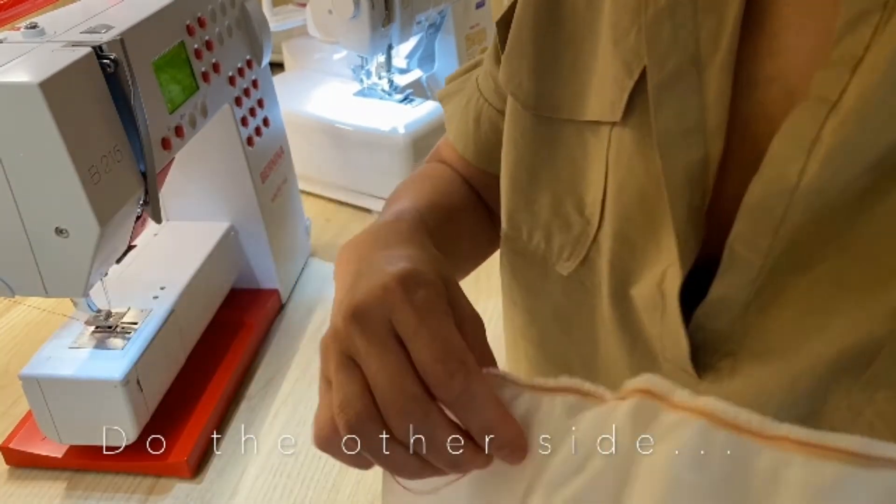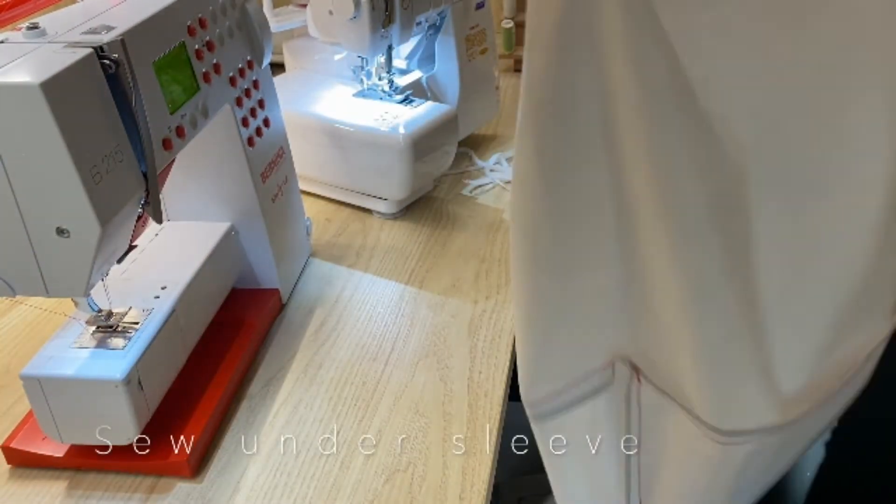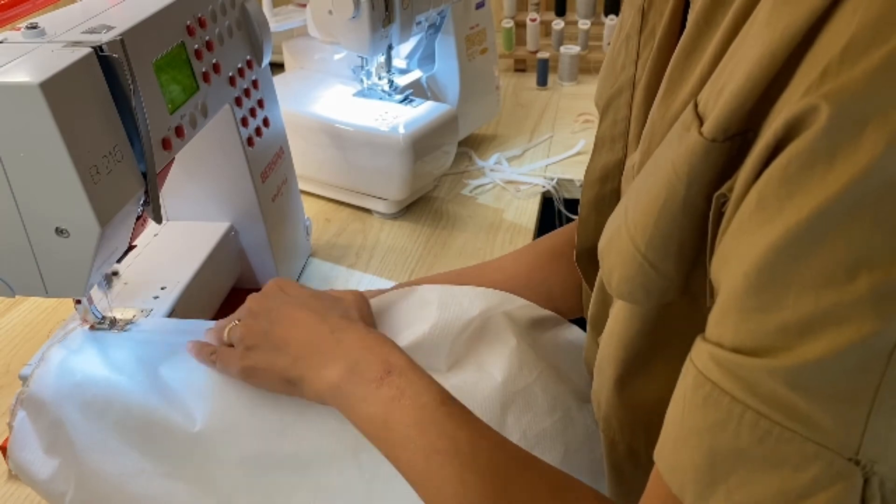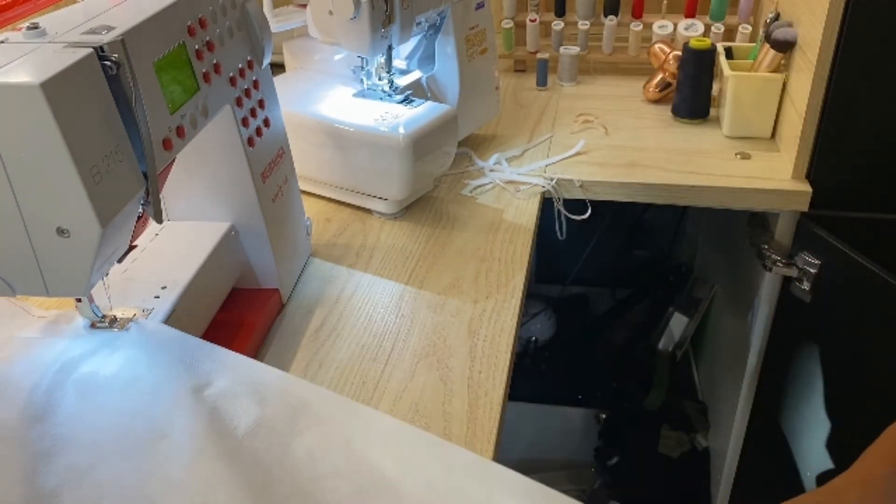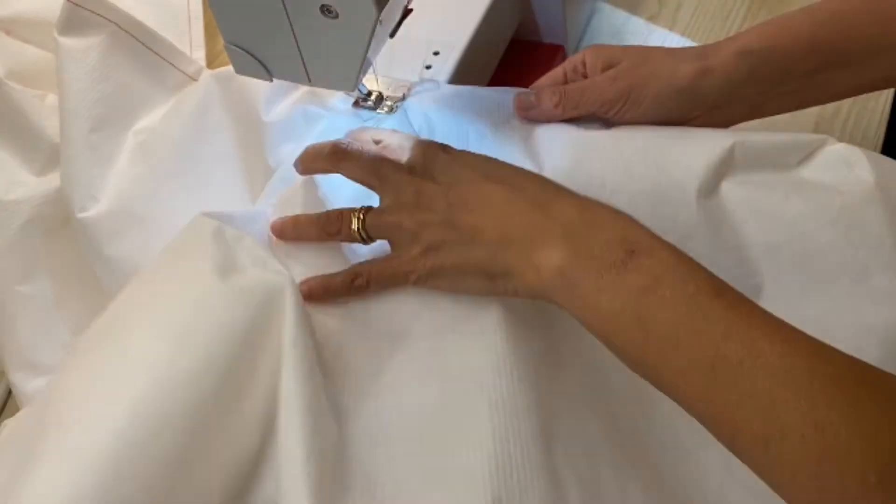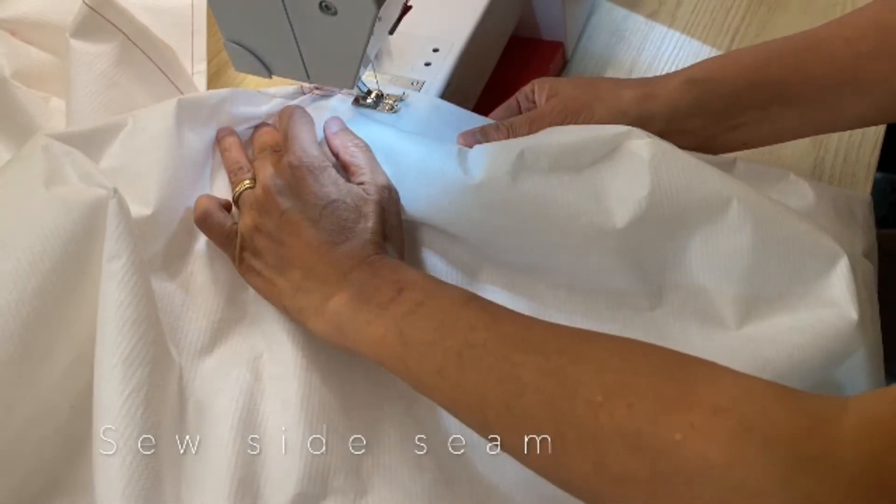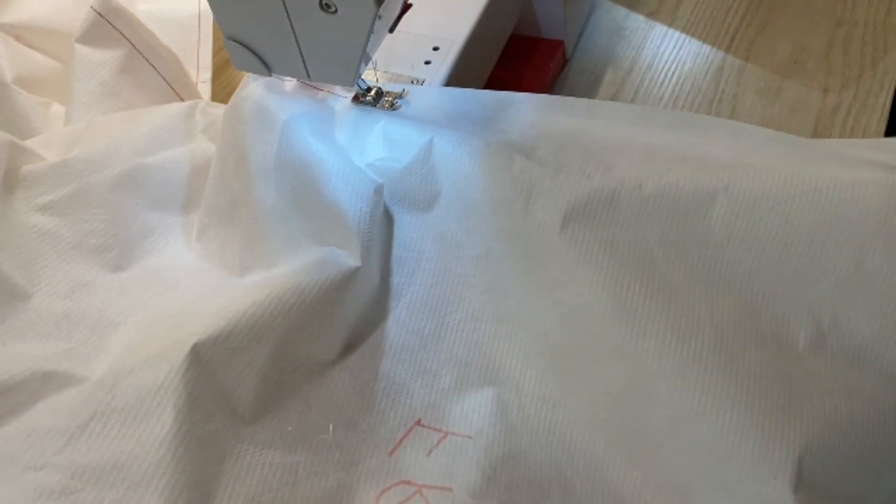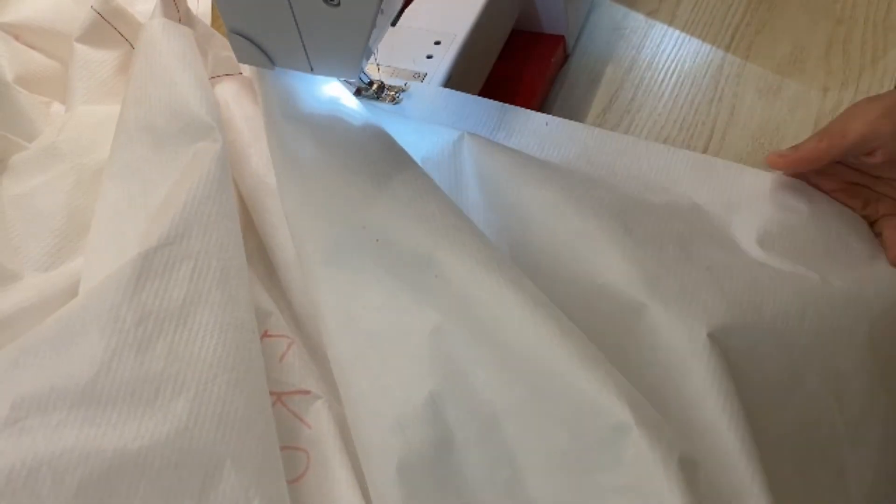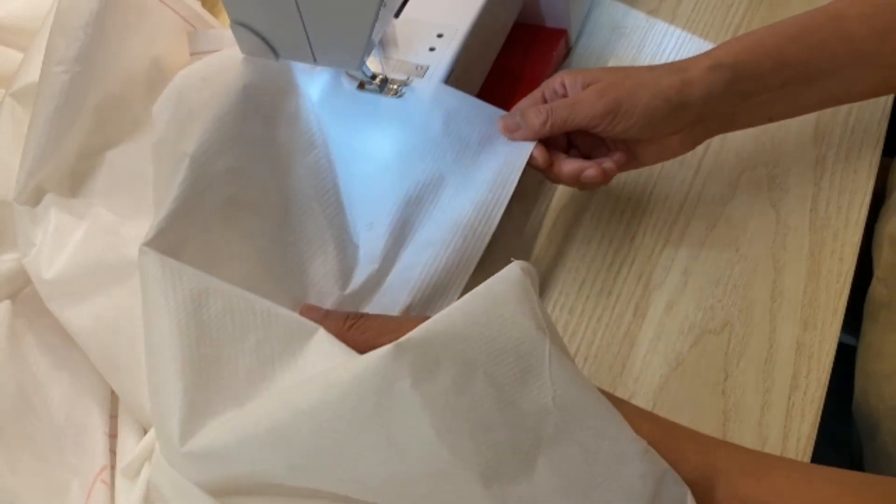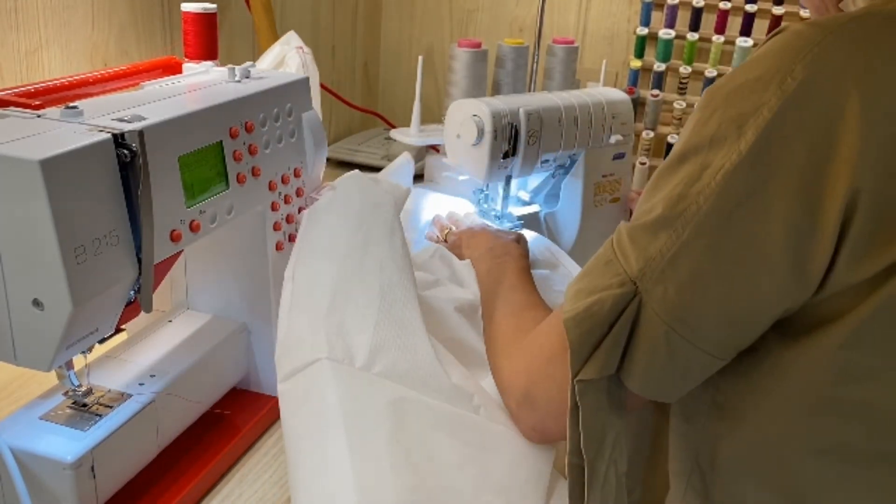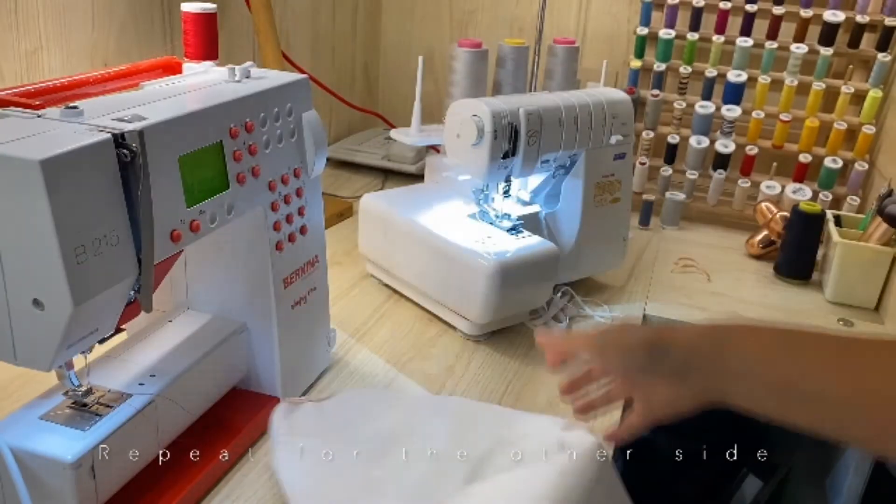So we're going to do that other side. There we go. And now we're going to sew under the sleeve all the way through the side seam. You're going to have to turn it once you get to that sleeve seam, and then continue down the side seam all the way to the edge of the garment. And then we're going to overlock again. And then we're going to repeat for the other side.